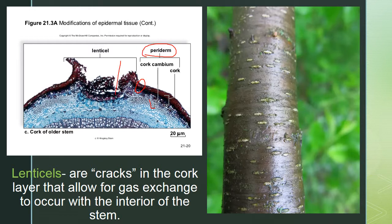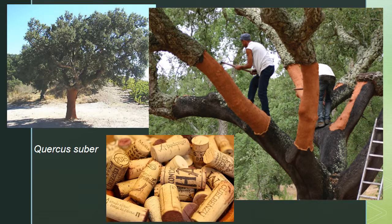The cork cambium plus cork together are called the periderm. Lenticels are cracks in the cork layer that allow gas exchange — you can see them on trees as small holes. Wine bottle corks are harvested from a particular oak tree, Quercus suber, which produces a lot of cork — that's where the name 'suberin' comes from.